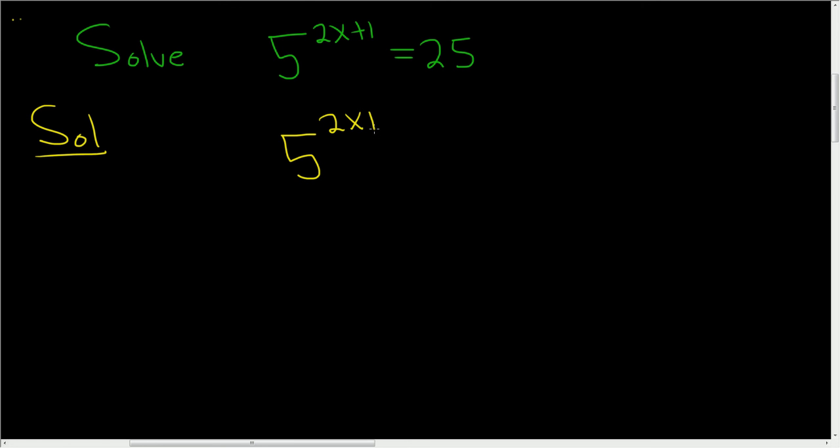Why? Well, because 25 is equal to 5 squared. Okay, so whenever you have b to the x equal to b to the y, that means that x is equal to y.